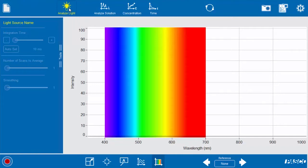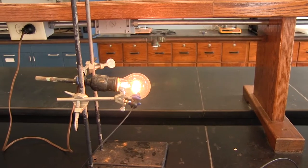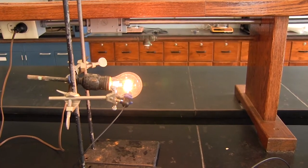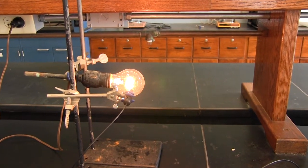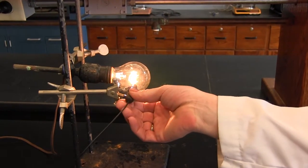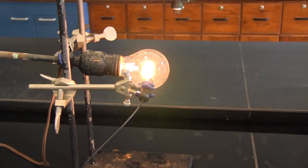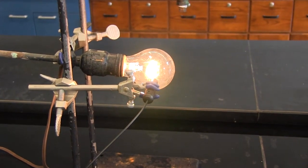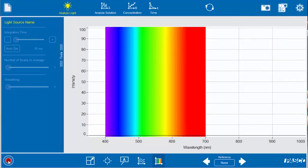So we have here a regular old-style incandescent light bulb that we used to have in our homes, the very energy intensive light bulbs, and you can see we have the top end of the fiber optic probe in a clamp pointing at the light bulb.